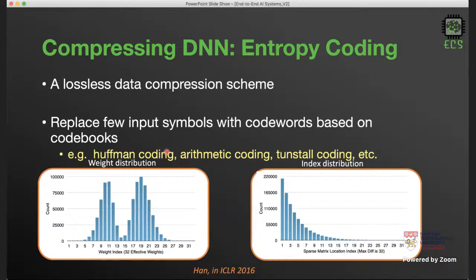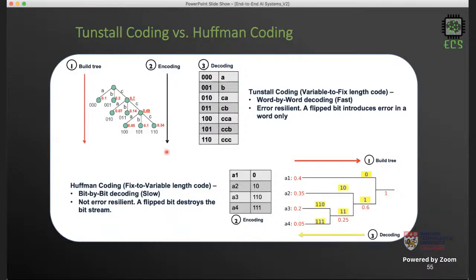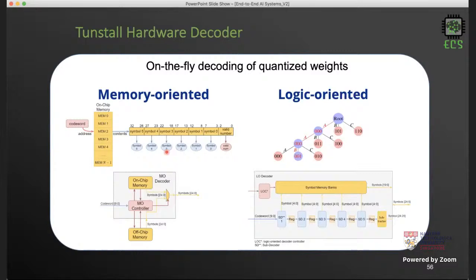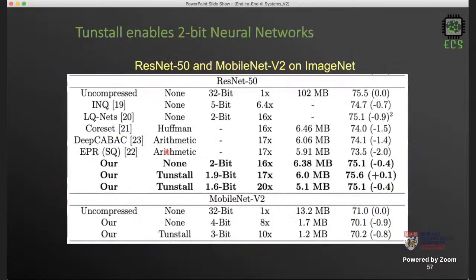After pruning and quantization, you can further apply entropy coding to compress weights even more. We explored different coding mechanisms and used Tunstall coding to compress weights, building dedicated hardware decompressors for the Tunstall decoder. We achieved up to 20x reduction in memory for weights — taking ResNet-50 from 102 megabytes at 32 bits down to just 5 megabytes at an average of 1.6 bits per weight, while retaining roughly the same accuracy: top-1 accuracy drops only from 75.5% to 75.1%. This enables deployment on smartwatches or smart glasses instead of mobile phones.